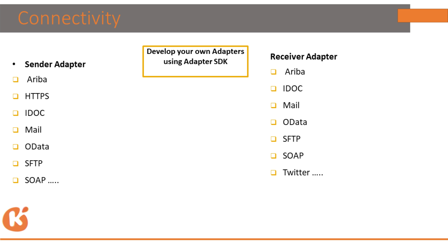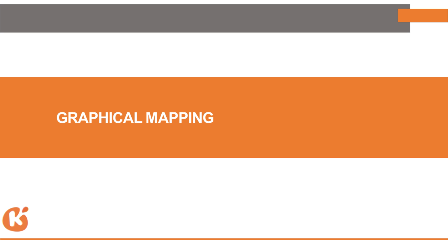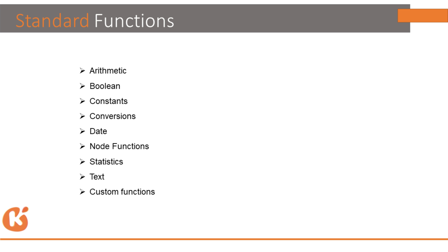In the next session we will cover graphical mapping, also known as message mapping in CPI. We use message mapping when the fields in the back-end system API are different from the front-end system API fields. At that time we use message mapping to convert the field names from the back-end to the front-end.